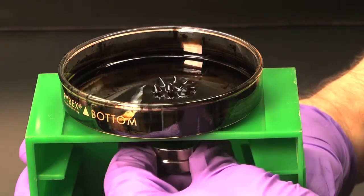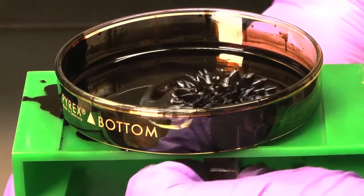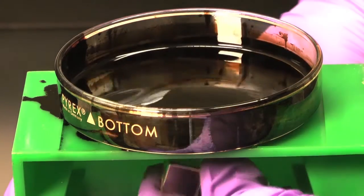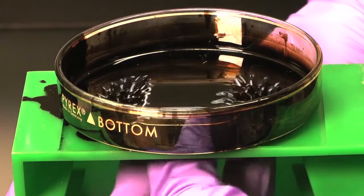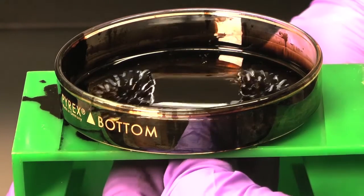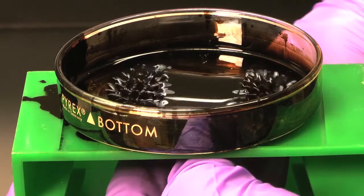A ferrofluid is made by suspending tiny particles of iron, hematite, or some other magnetic metal in oil. The particles are coated in a surfactant so they won't clump together. Otherwise, a strong magnet could pull them right out of the oil.